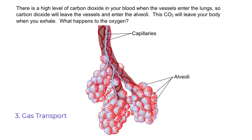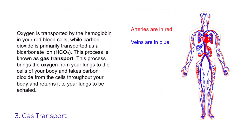Step three is gas transport. Oxygen is transported by the hemoglobin in your red blood cells, while carbon dioxide is primarily transported as a bicarbonate ion. This process brings oxygen from your lungs to the cells of your body, and returns CO2 from the cells back to your lungs to be exhaled and eliminated from your body.